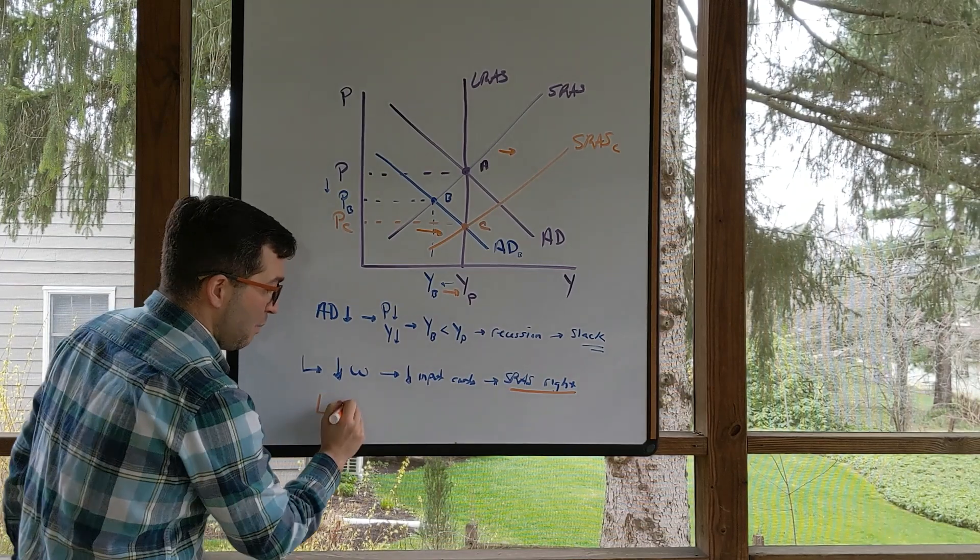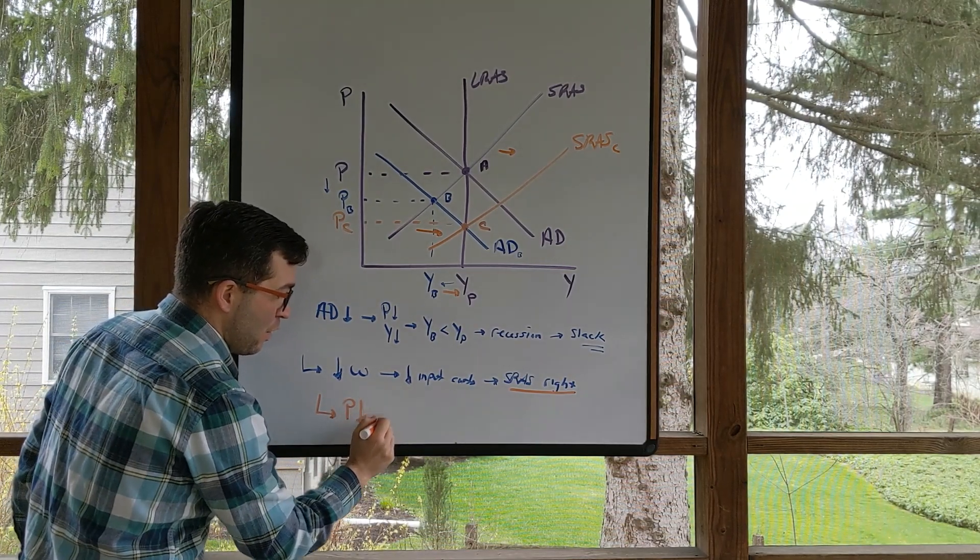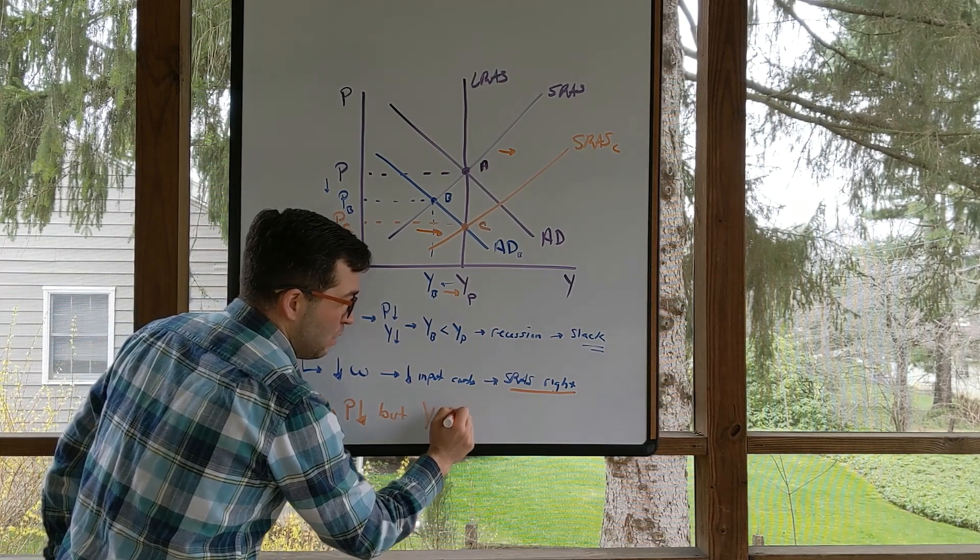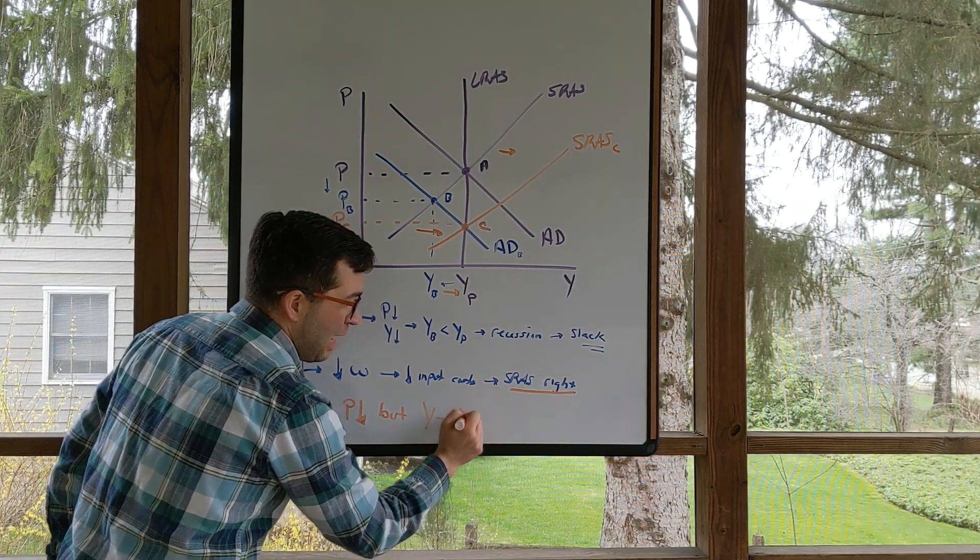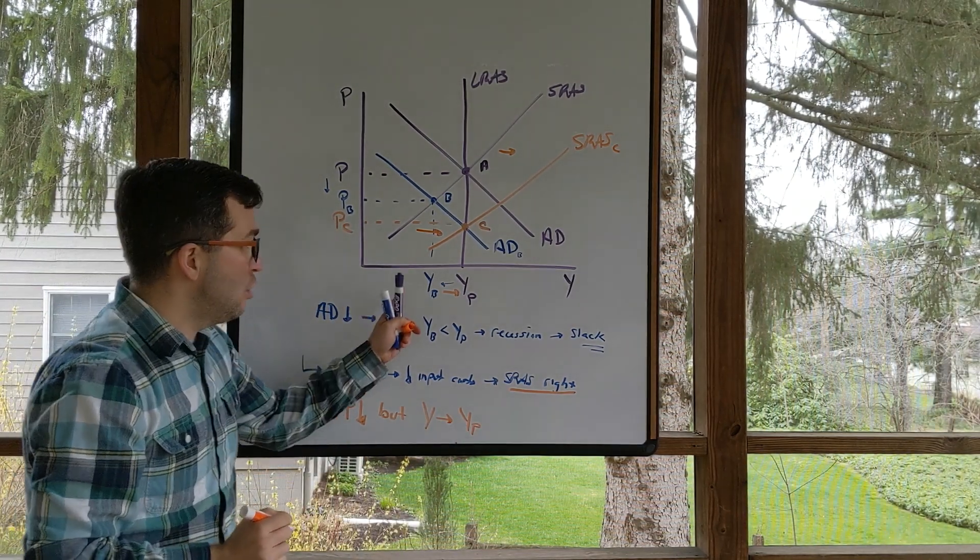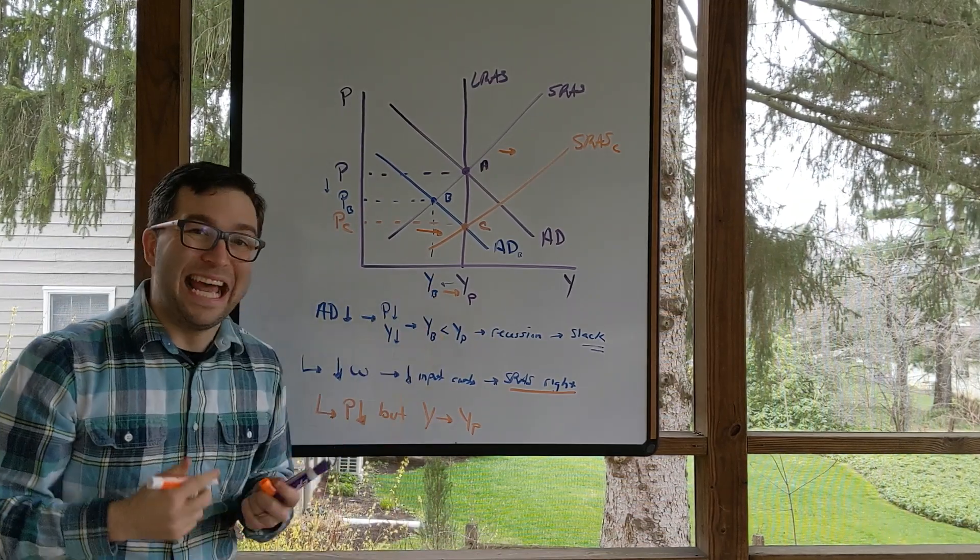This results in the price level going down even further, but output goes back to my potential GDP. So my unemployment rate's back to that natural rate of unemployment.